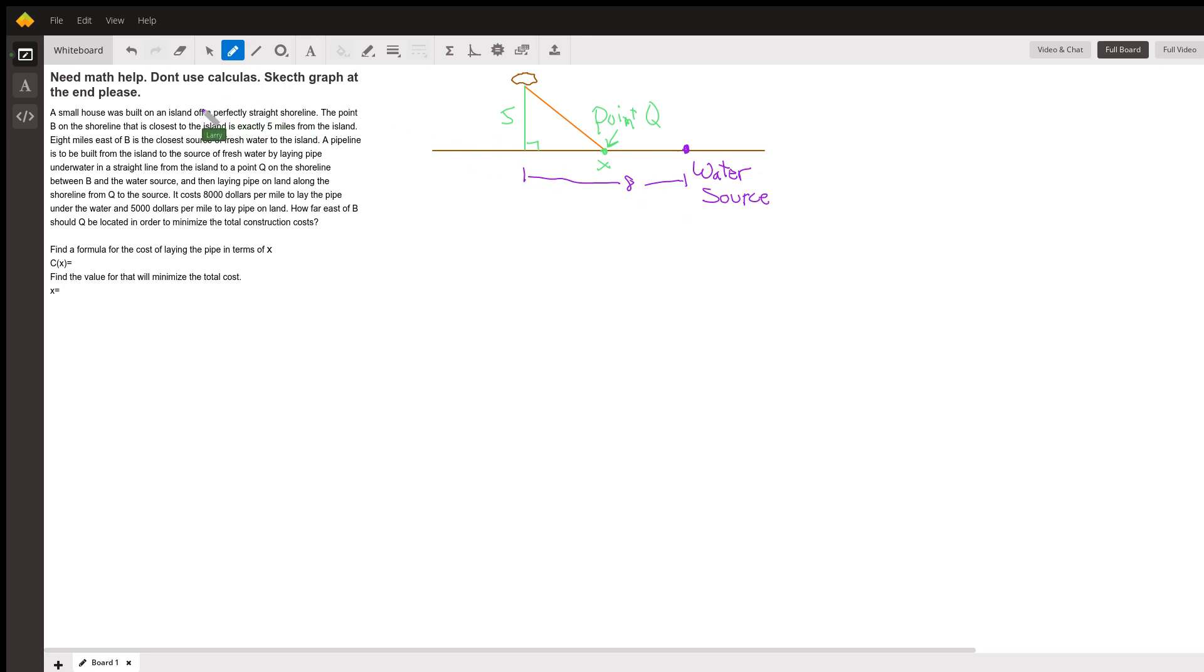Eight miles east of B, right. Okay, so we need this point B. And there we're going to build the pipeline from the island on a diagonal there to the point Q, which really is that coordinate X. So I'm not sure why we don't just call it point X. The distance is X from point B, and this distance here is 8 minus X. So our equation for the cost in the variable X is going to be the length of that orange diagonal pipeline.